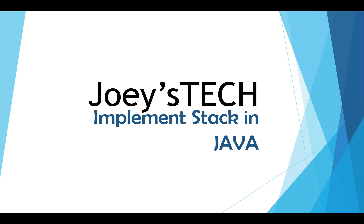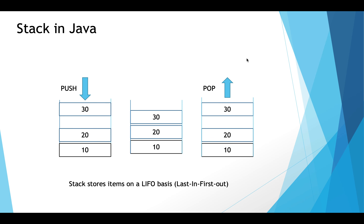Let's move ahead to understand a little bit about stack — the theory portion will be very quick. The middle figure here is the stack. You can see it has three elements: 10, 20, and 30. Whenever a stack is discussed, you hear about two operations: push and pop. When you add an element, it is added from the top of the stack — this operation is called push. When you remove an element, it is also removed from the top — this operation is called pop. The last element added is the first element removed, meaning the stack stores items on a LIFO basis — last in, first out.